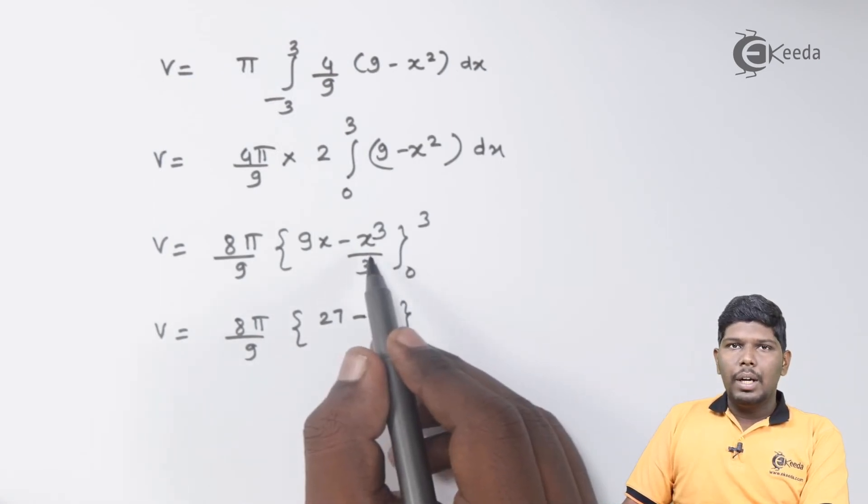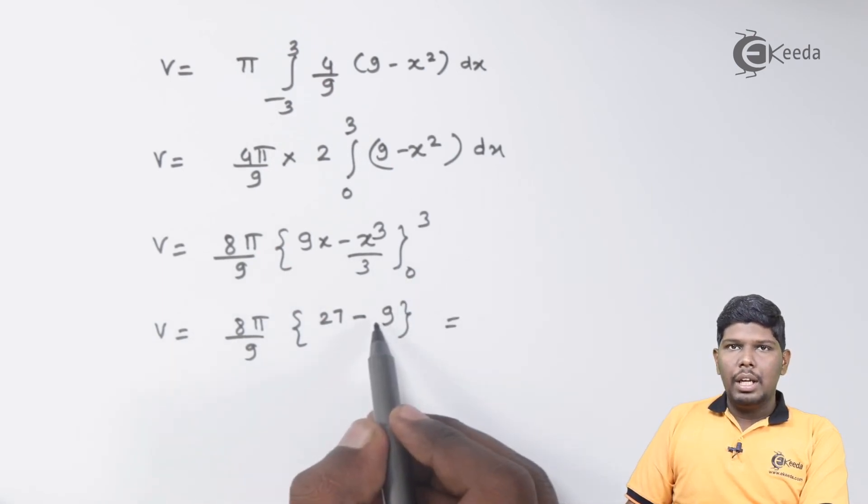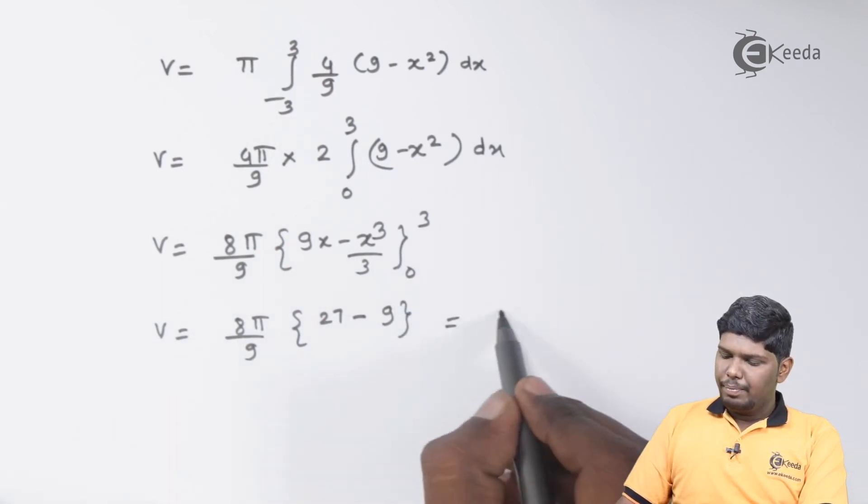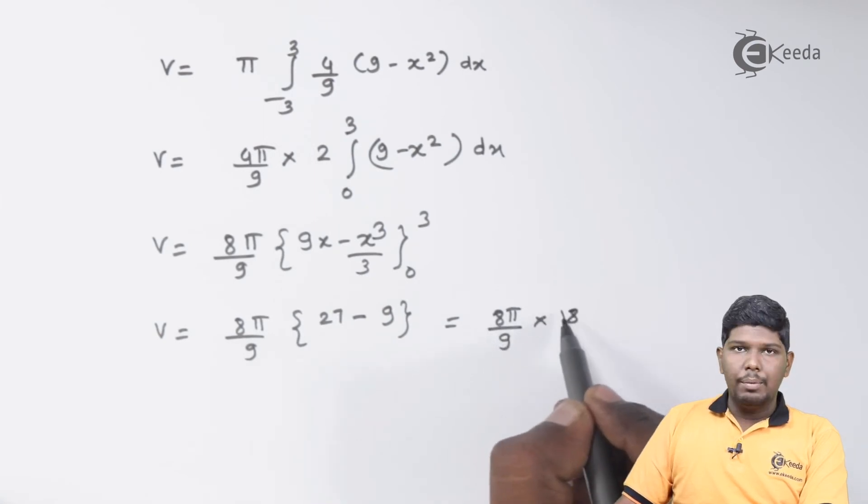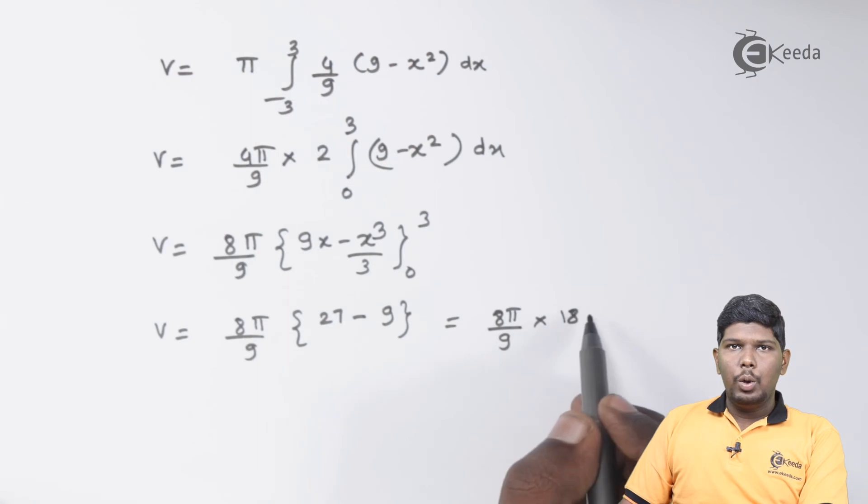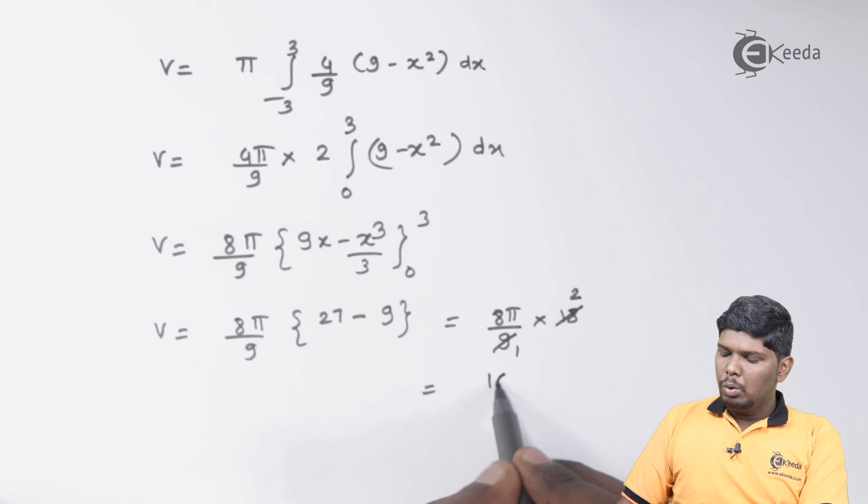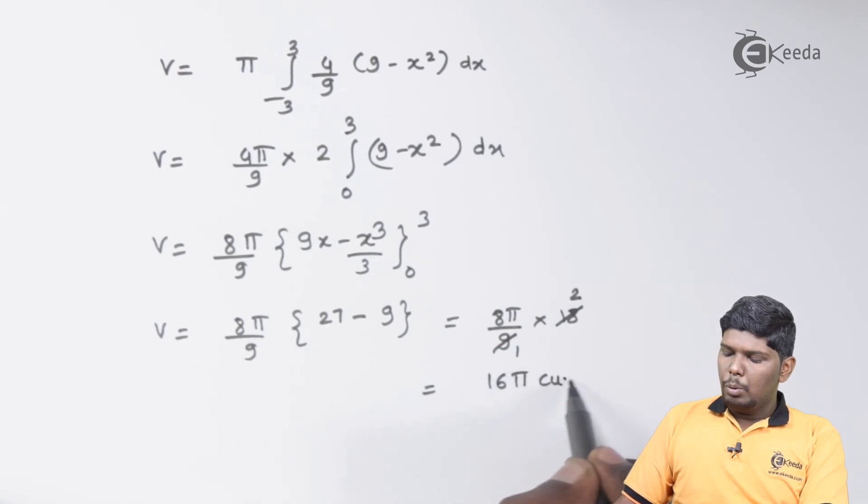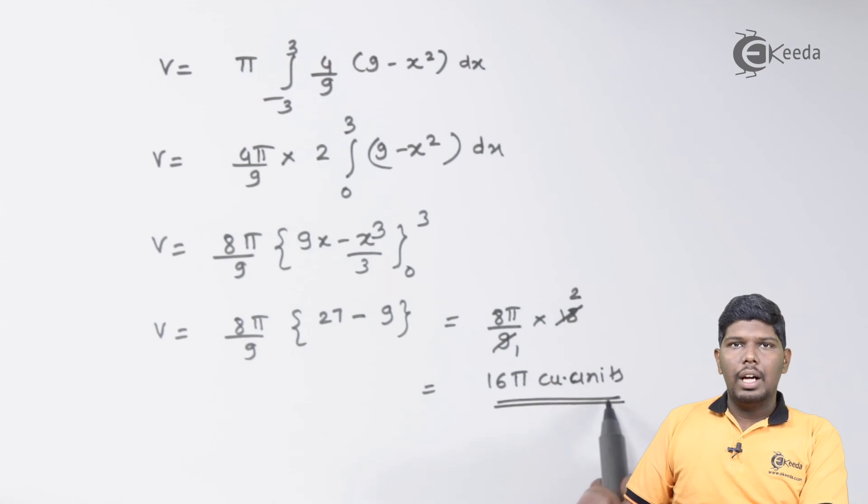27 - 9 will give you 18. So we have 8π/9 × 18. 9 twos are 18. So 8π × 2 will give you 16π cubic units. This is our final answer.